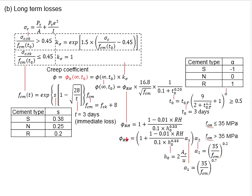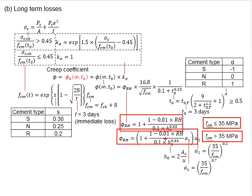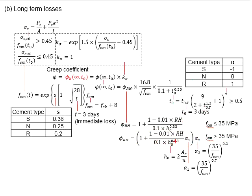For you to determine the phi RH here, you will need to first determine the FCM. You know that FCM is equal to FCK plus 8. When it is smaller than 35, you use this equation. In the case that this equation is to be used, you will need to determine the alpha 1 and alpha 2 in terms of FCM.